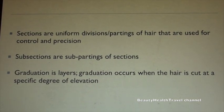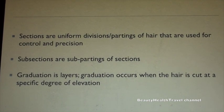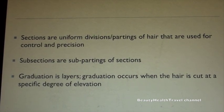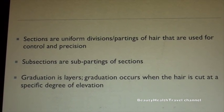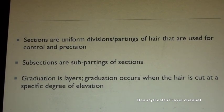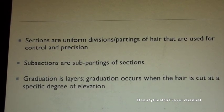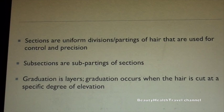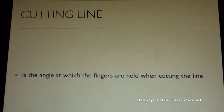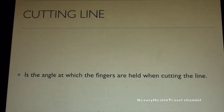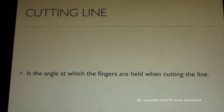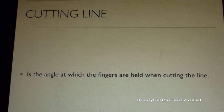Sections are uniform divisions and partings of hair that are used for control and precision. Subsections are subpartings of sections. Graduation is layers — graduation occurs when the hair is cut at a specific degree of elevation. The cutting line is the angle at which the fingers are held when cutting.